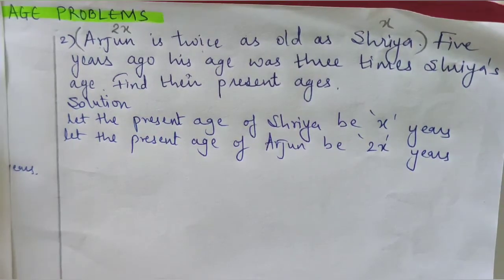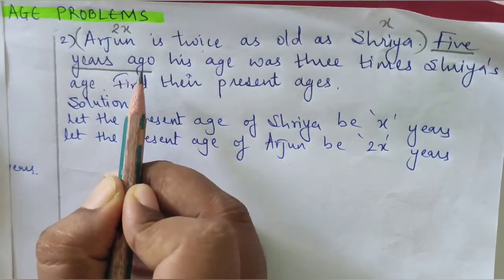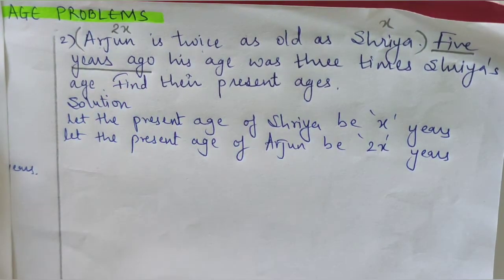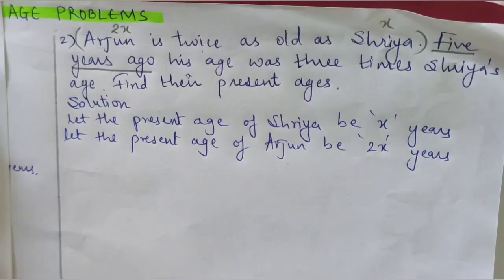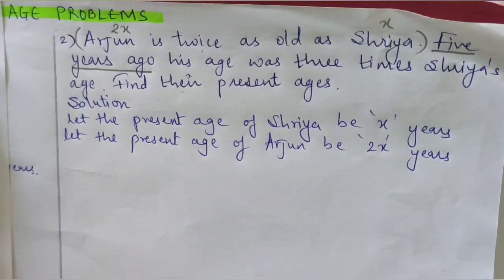Now let us read the next statement: 5 years ago. The word 'ago' refers to the past. In the earlier problem it was 5 years later — future tense — so we added the ages. Here it is 5 years ago — past tense. If your present age is 15, your age 5 years ago was 15 − 5 = 10.